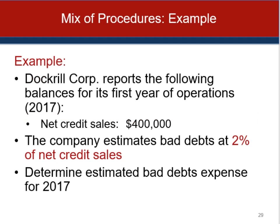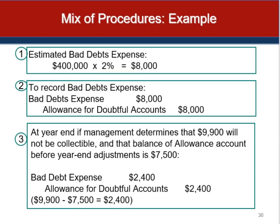The mix of procedures example: a corporation reports net credit sales of $400,000 and historically 2% of net credit sales are not recovered. You would estimate this year's bad debt expense as 2% of $400,000, or $8,000. You record the bad debt expense, and the balance in the allowance for doubtful accounts increases by $8,000 without regard to the current balance. If over time the allowance for doubtful accounts showed a very large credit balance, you may have overestimated the percentage and might adjust your experience and change the percentage going forward.